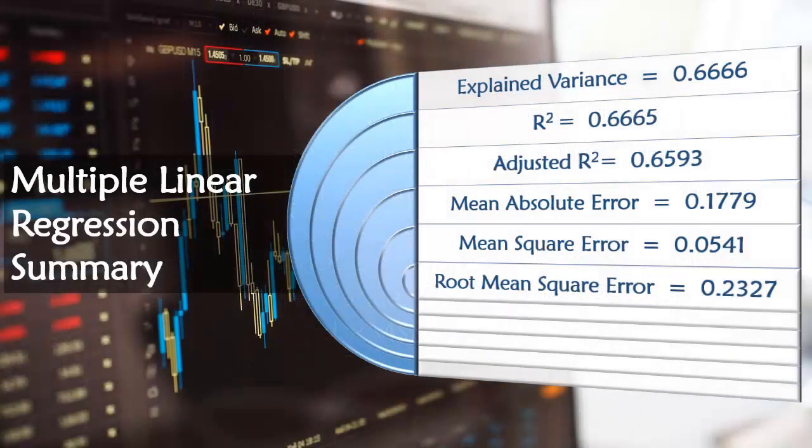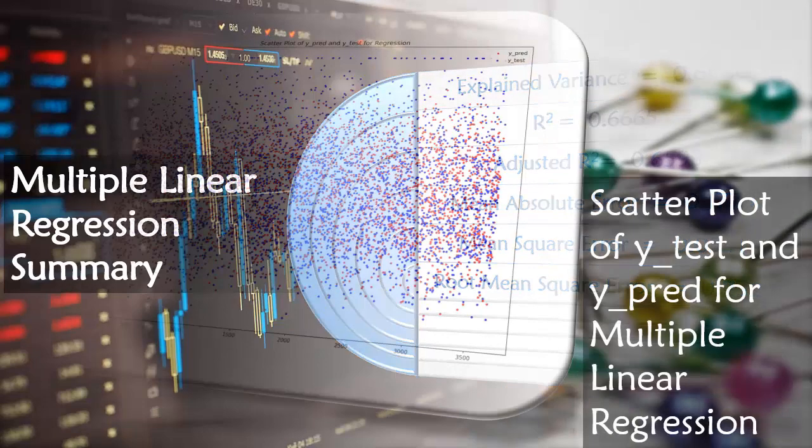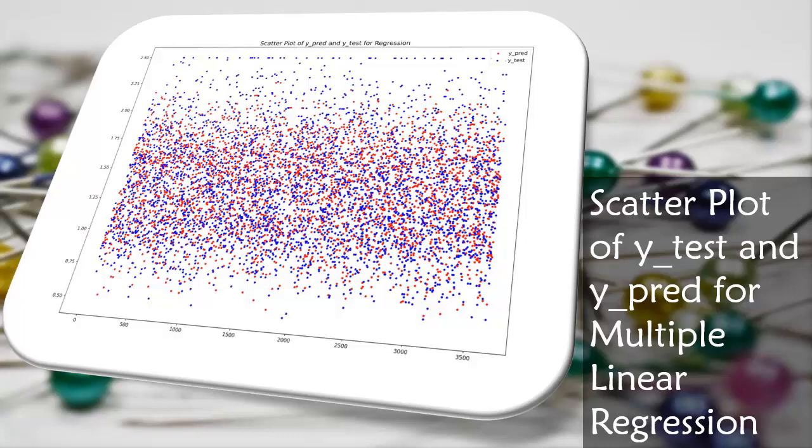Here is the summary of our multiple linear regression. We can clearly see that our R² is 0.6665. So we can say that our model has a moderate fit to the data. The figure here shows the scatter plot of y_test and y_predicted for multiple linear regression.